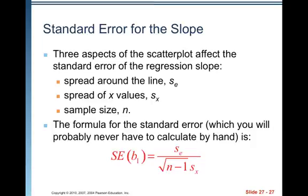Standard error for the slope. So we've talked about standard error for the errors, standard deviation for the errors. Now we're going to talk about standard error for the slope. Three aspects of the scatter plot affect the standard error of the regression slope, and we just talked about them. They're spread around the line, the SE, the spread of the X values, SX, and the sample size, N.